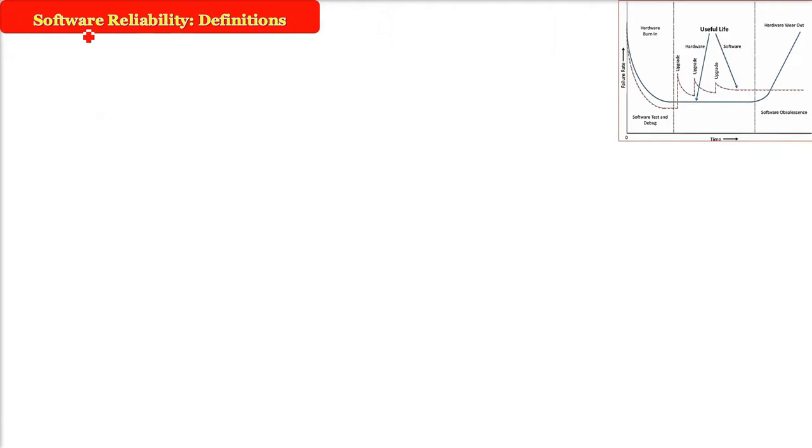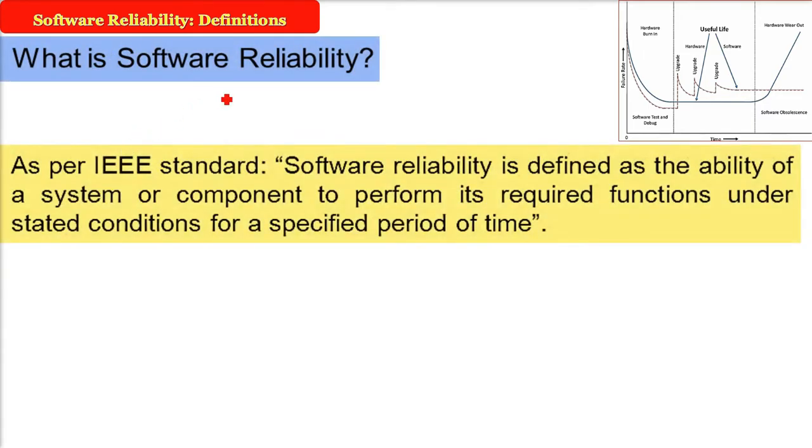What are the definitions of software reliability? The software reliability definition as per IEEE standard is: software reliability is the ability of any system, component, software, or product.